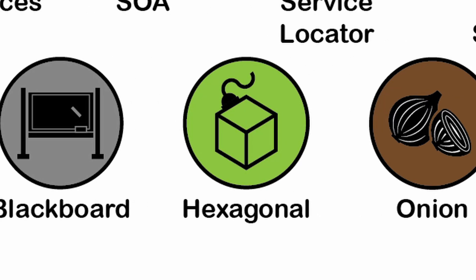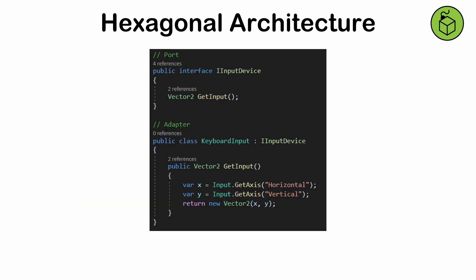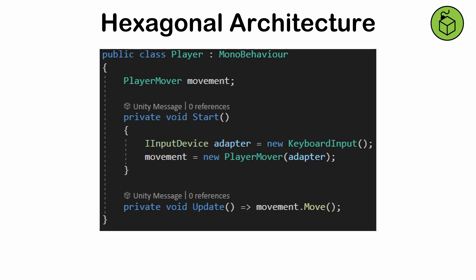Hexagonal architecture, also known as the ports and adapters pattern. A port refers to an interface, while an adapter in this context refers to the specific implementation of that interface. In hexagonal architecture, the core application is surrounded by these ports and adapters, decoupling the core from external systems. It's ideal for systems that need to swap out external dependencies like databases or input mechanisms without affecting the core logic.